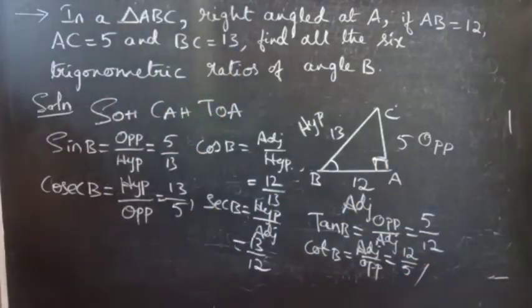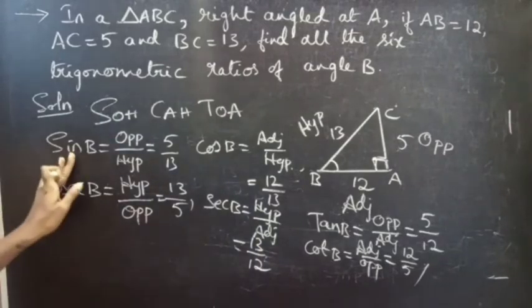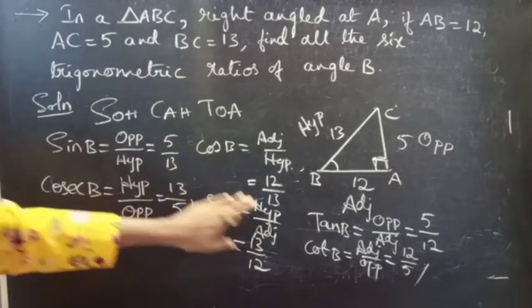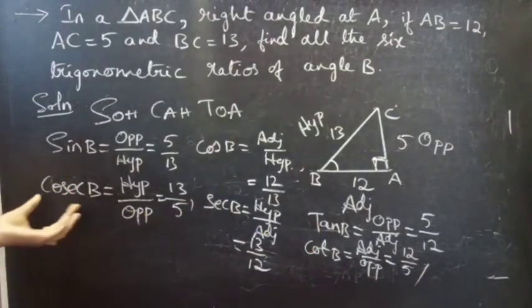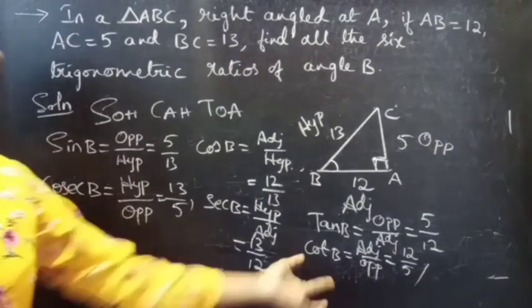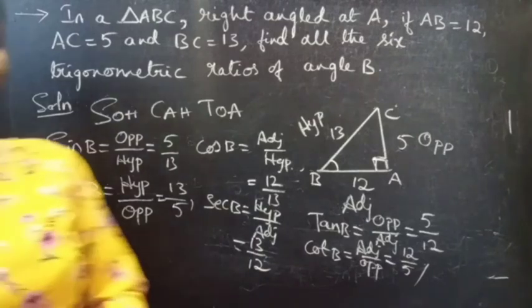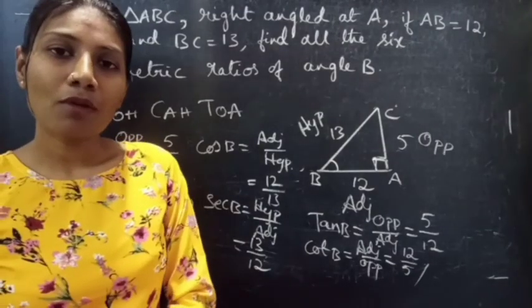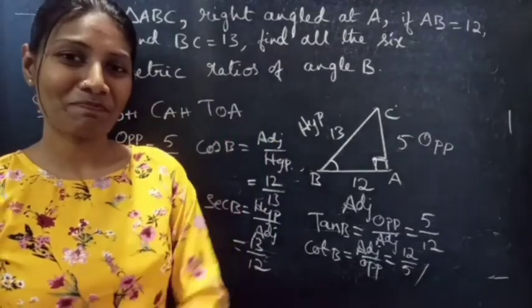So if we find sin, cos and tan first — the first three trigonometric ratios — it is easy to find the next three ratios. We have seen a problem from trigonometric ratios. Hope you will understand. We will see you in the next video. Until then, bye bye.